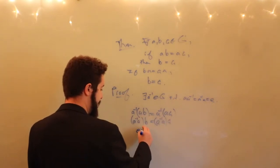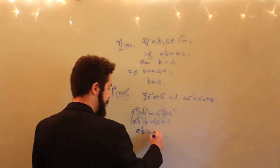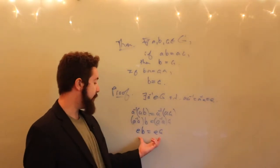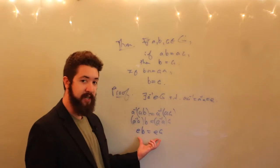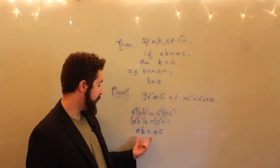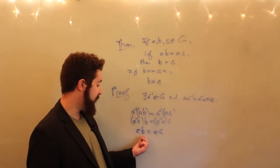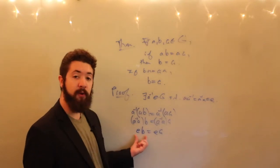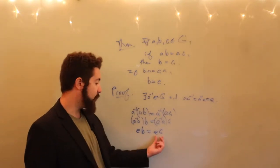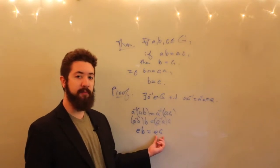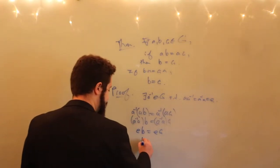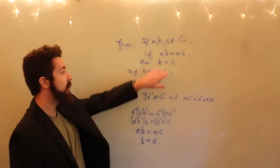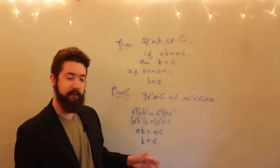So this means E times B equals E times C. By the second property — existence of an identity element — E times B equals B, and E times C equals C. Thus B equals C, and left cancellation is proven.